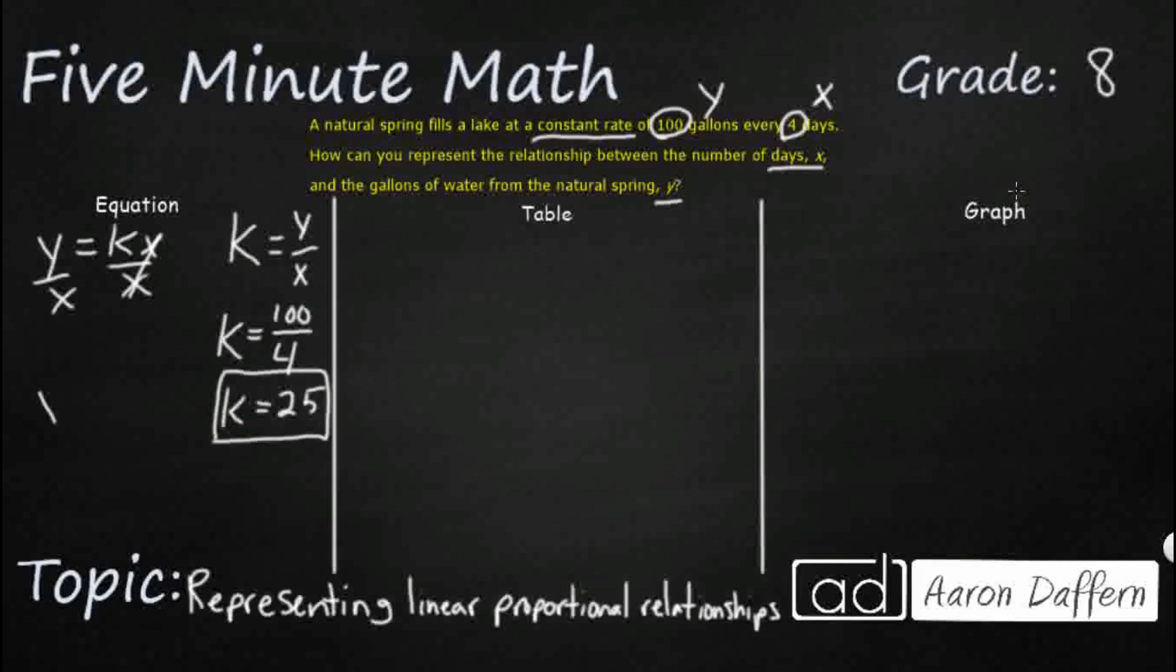Now we're going to put it back in this original form. So we would say y equals, instead of k, we'll say 25x. So every 4 days you get 100 gallons. Really, that's 25 gallons a day, because 25 times 4 makes 100. So that's how we could represent that as an equation.